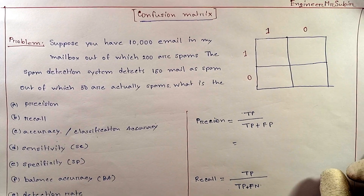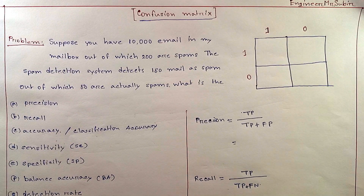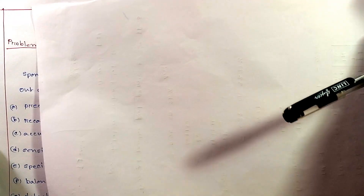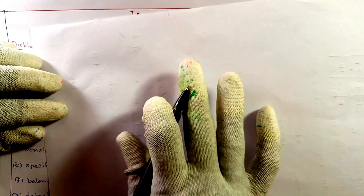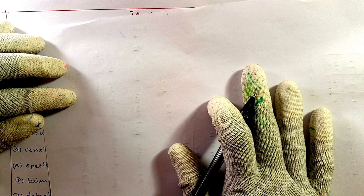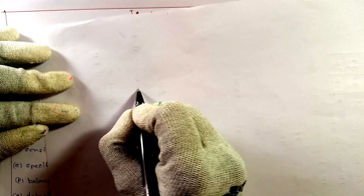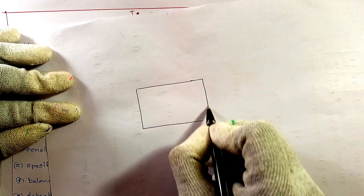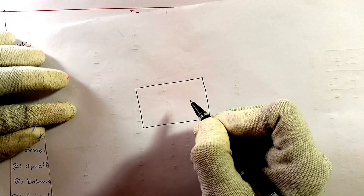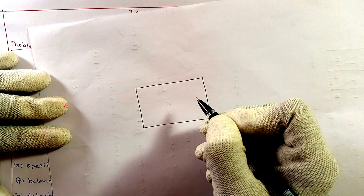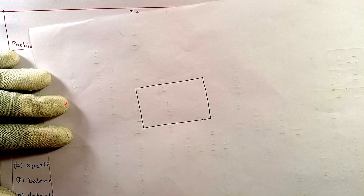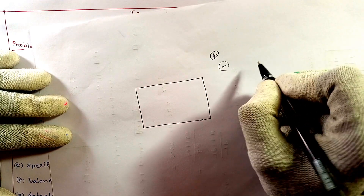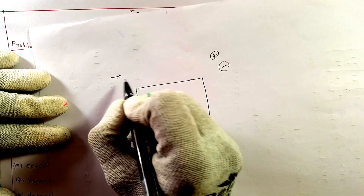First, let me describe a little about the confusion matrix. This is a totally easy concept. Suppose we design an AI model, and this model tells us — if we give it some samples — how many people are COVID positive and how many people are COVID negative. So this is our model.